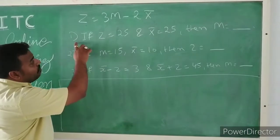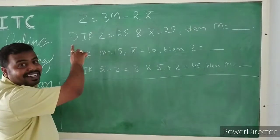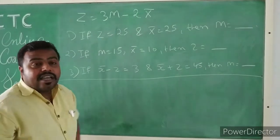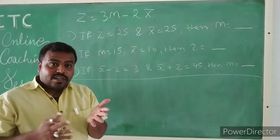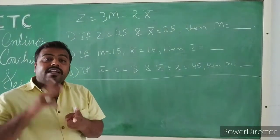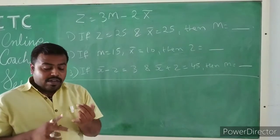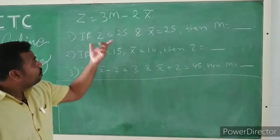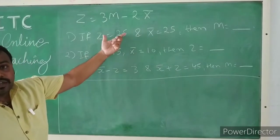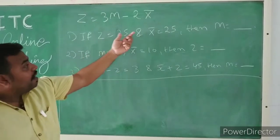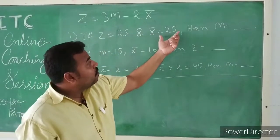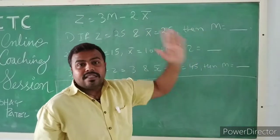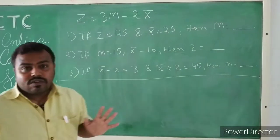As you can see on the board, in the first question, values of any two parameters are given. We need to find the value of the third parameter. That is, if Z (mode) is equal to 25 and x̄ (mean) is equal to 25, and capital M (median) is equal to 20.